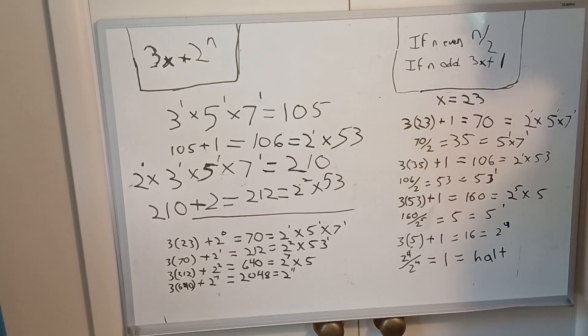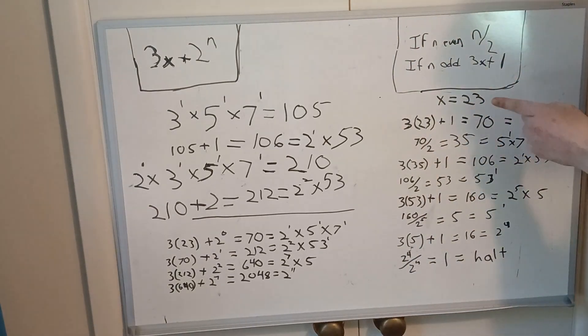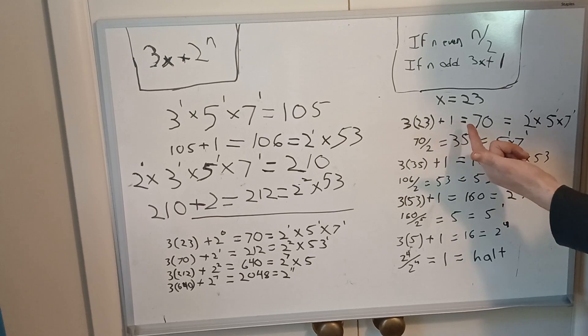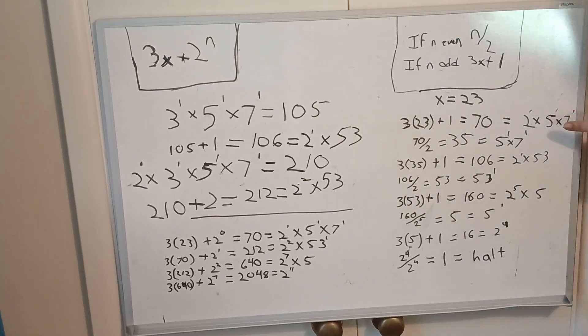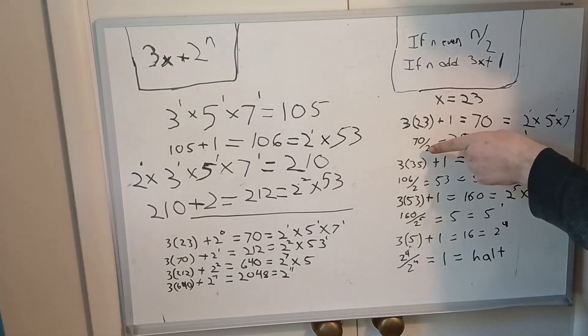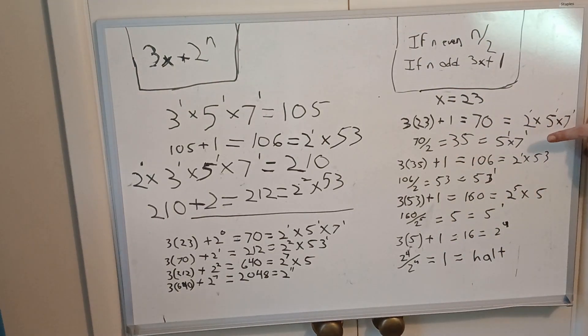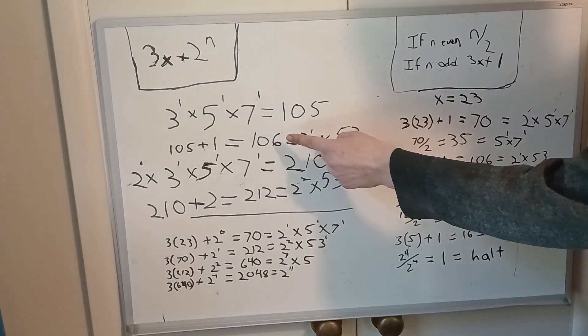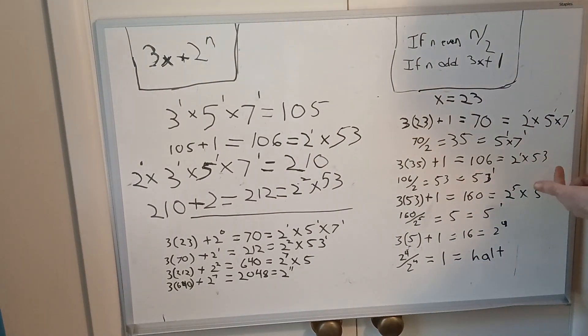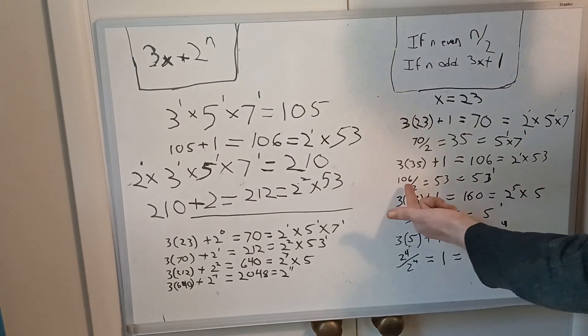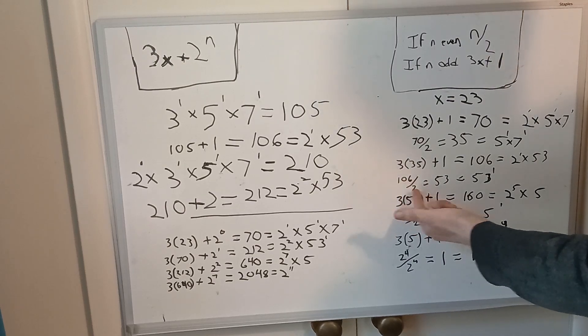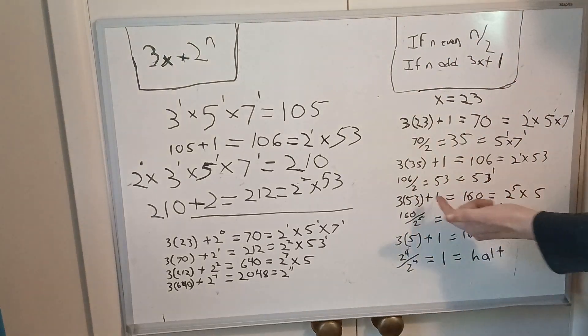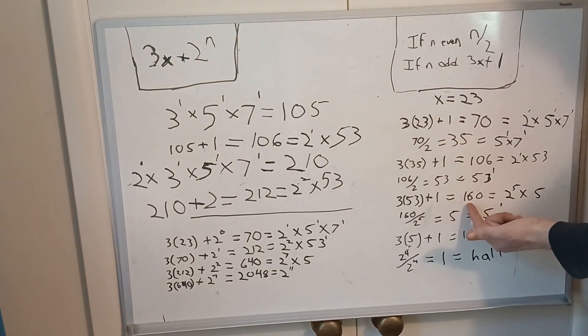So we're going to start with 23. We're going to do the original form: 3 times 23 is 69, plus 1 is 70. That is a prime factorization of 2 times 5 times 7. It's even, so we're going to have it. That takes it down to 35, prime factorization of 5 to the 1 times 7 to the 1. So 3 times 35 plus 1 is 106. We already have that over here. To get 2 to the 1 times 53, this is an even number, so we're going to have it one more time, for two halving steps to go to 53, which is a prime number. So 3 times 53 plus 1 is 160, which is prime factorization 2 to the 5 times 5.